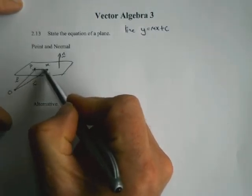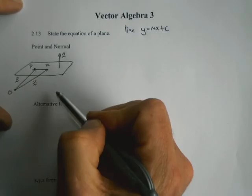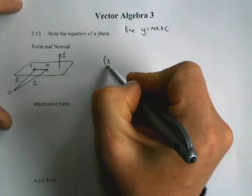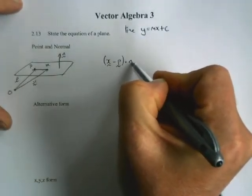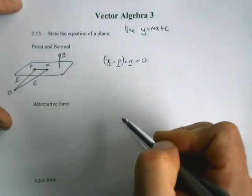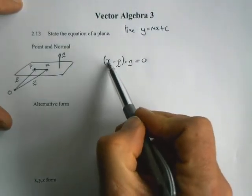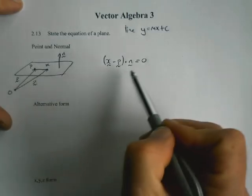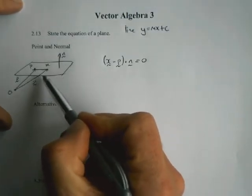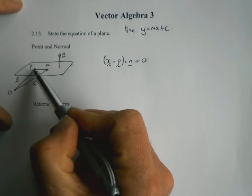...then it will be at right angles to the normal. So if the vector x minus P dotted with the normal equals zero, then we'll know that the vector x minus P is at right angles to the normal, which means it must lie in that plane, and it goes through the point P, because it's the vector x minus P.